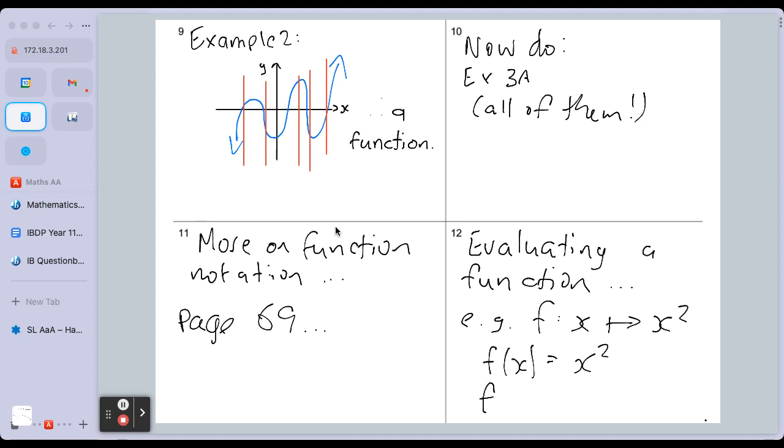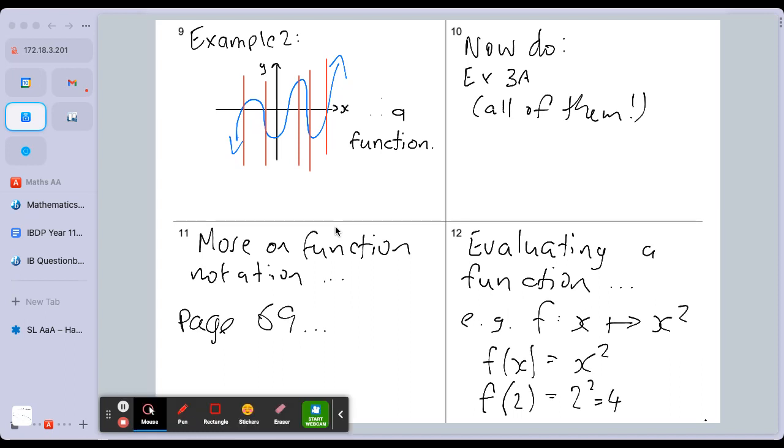And then we can, if we want to find out what the output would be for a given input, we replace the x with a number like 2. And then we would replace the x in the rule with a number like 2, and then we would get our result. That's called evaluating. Good so far.